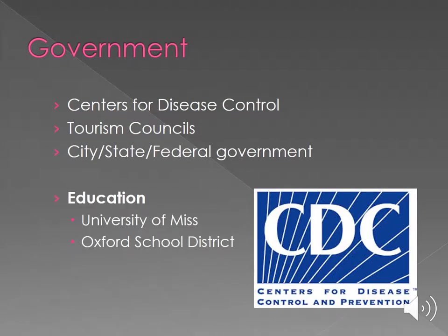The government certainly needs communicators. One place you might work is the Centers for Disease Control, which has a very good communication staff that helps get the word out about a rise in certain diseases or preventive care. Local cities, states, and federal government often have a communications director. Tourism councils may also have a communications director. Education has communications specialists too — this might be at your local schools, such as the Oxford School District, or at a university like the University of Mississippi.